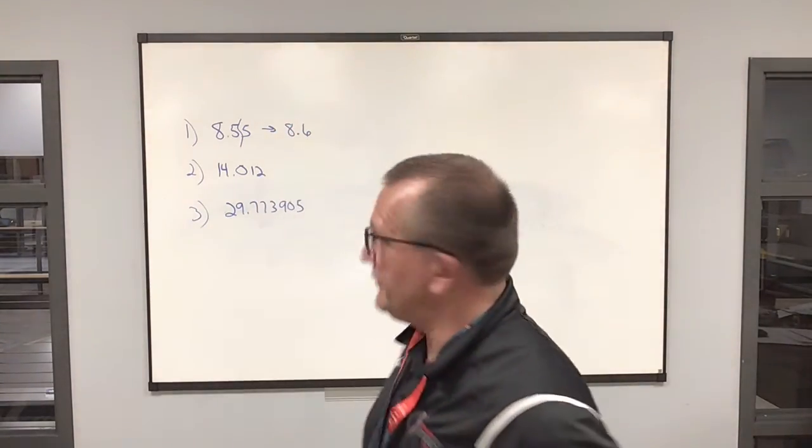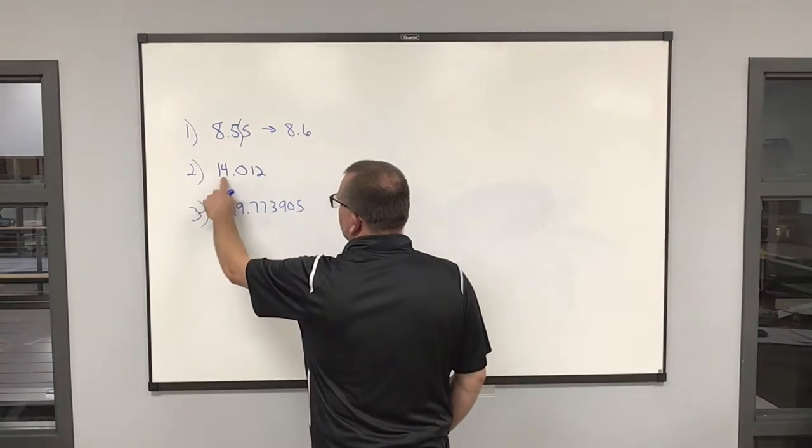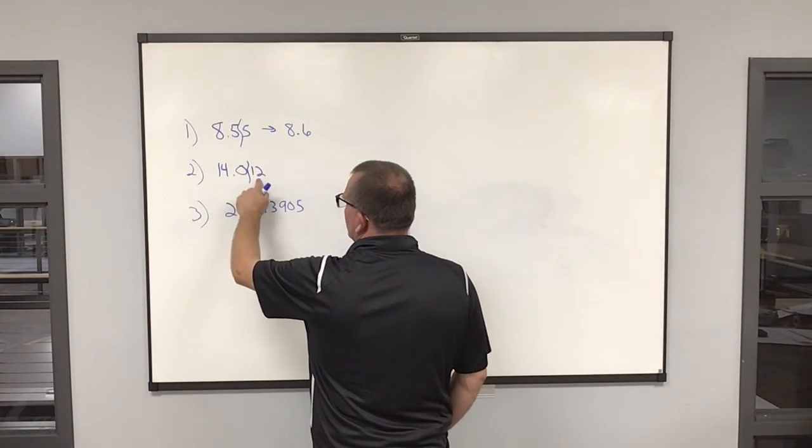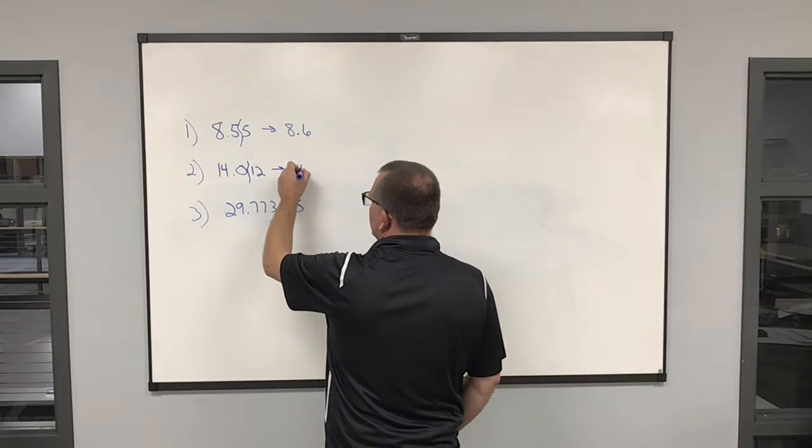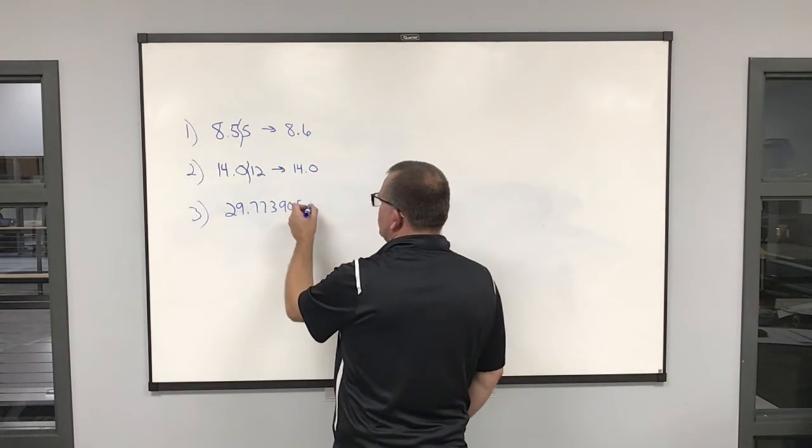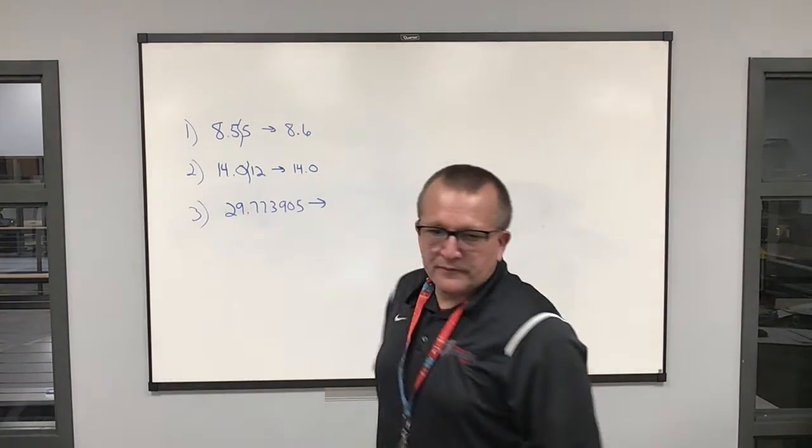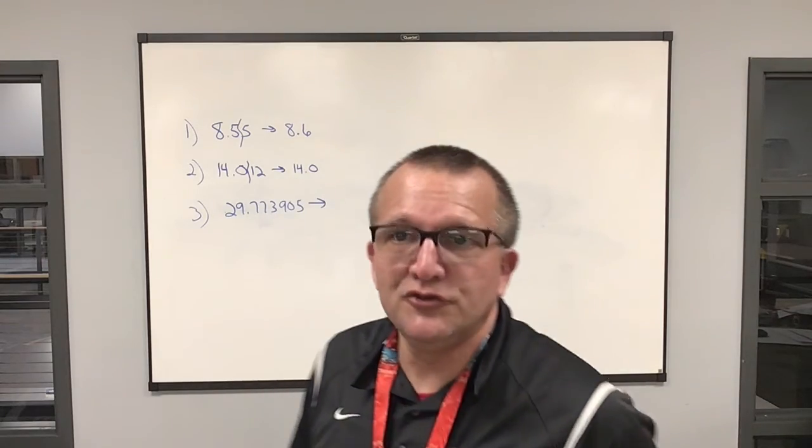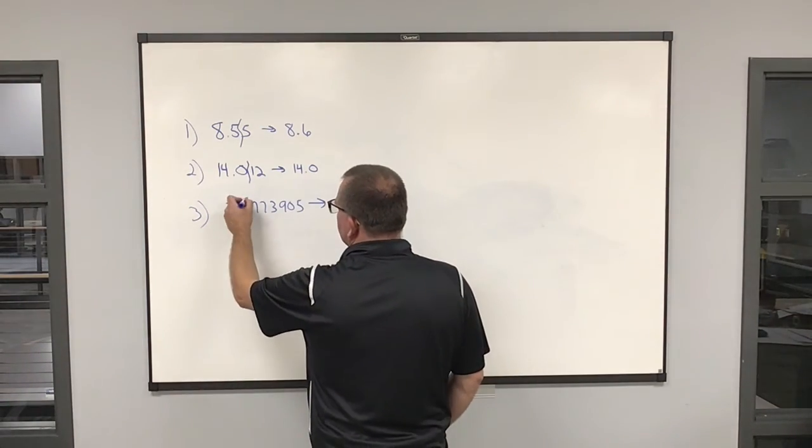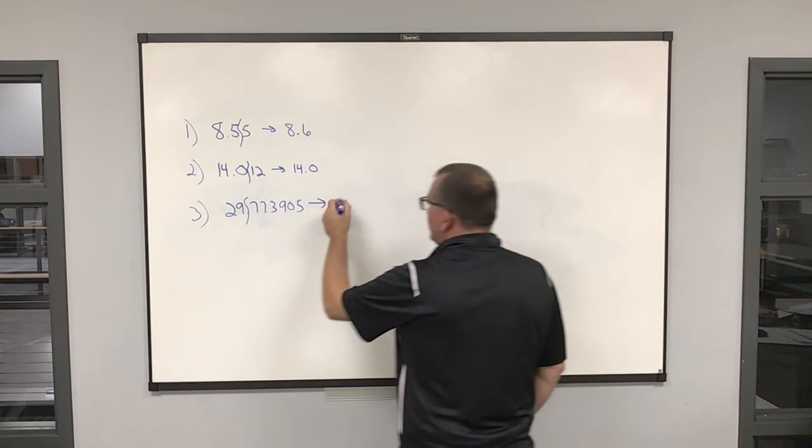Number two, I want to round to three sig figs. One, two, three. One tells me to leave it alone. Fourteen point zero. Number three, I want to round to two sig figs. One, two. Seven tells me to round up, which would be 30.